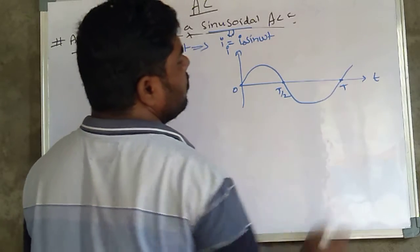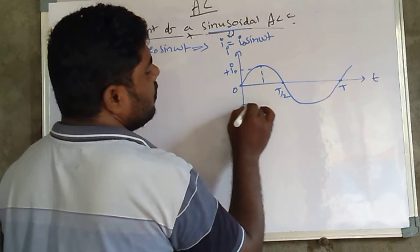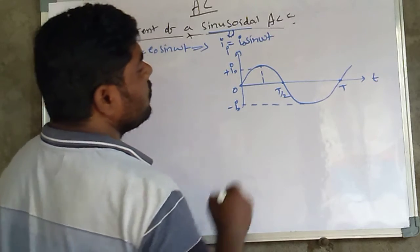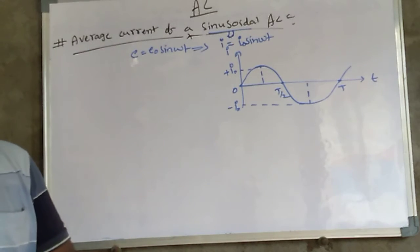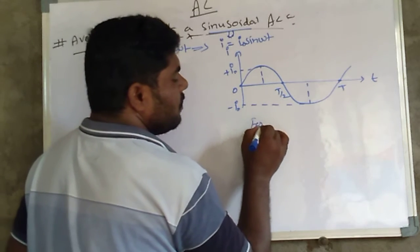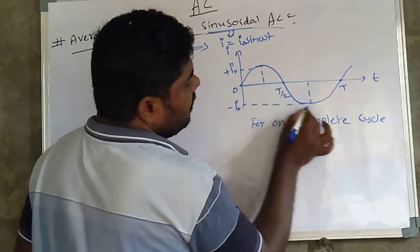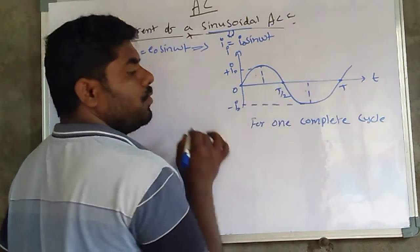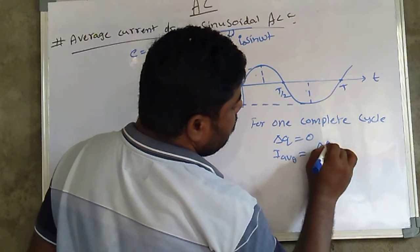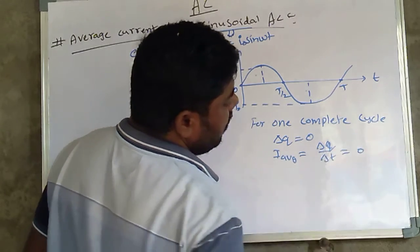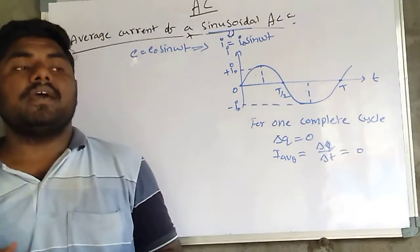This is a full cycle. The peak current is +i₀ in the positive half and -i₀ in the negative half. Both areas are equal and opposite, so for one complete cycle the positive area and negative area are equal and opposite. That's why the average current for one complete cycle is zero.